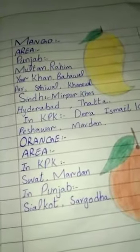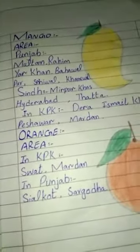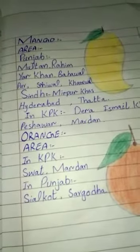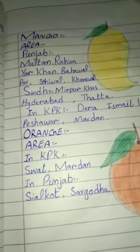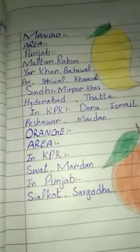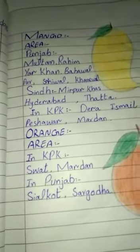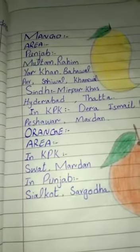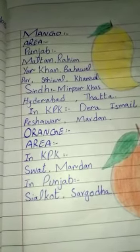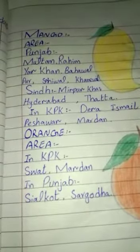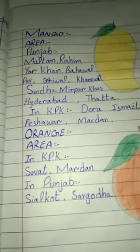Number one is mango. Mango, which is the king of fruits. Mango is grown in Punjab. In Punjab, cities include Rahim Yar Khan, Bahawalpur, Sahiwal, and Khanewal. These are many cities where mango is grown in Punjab.